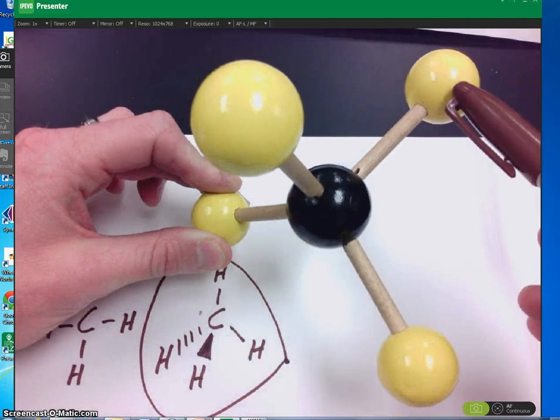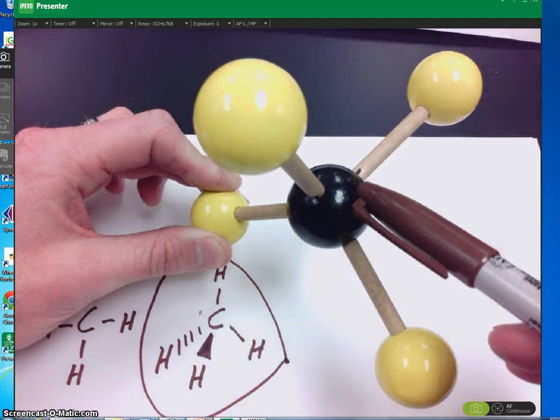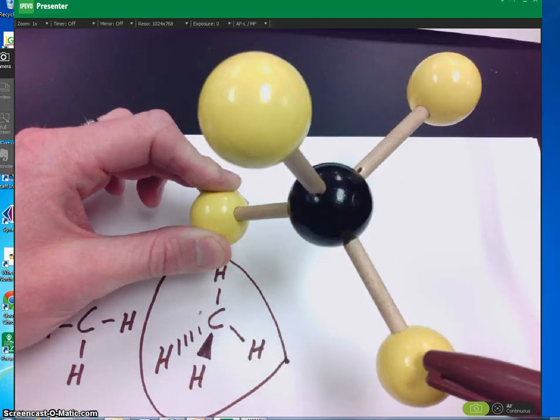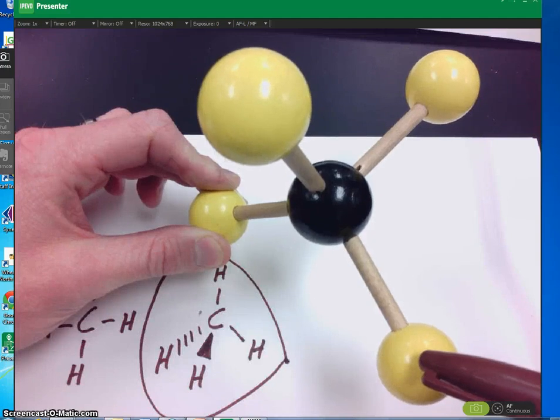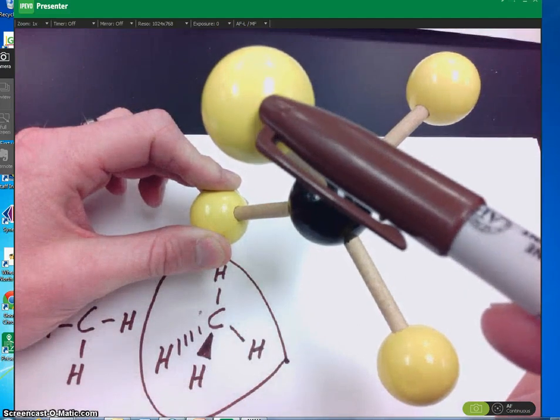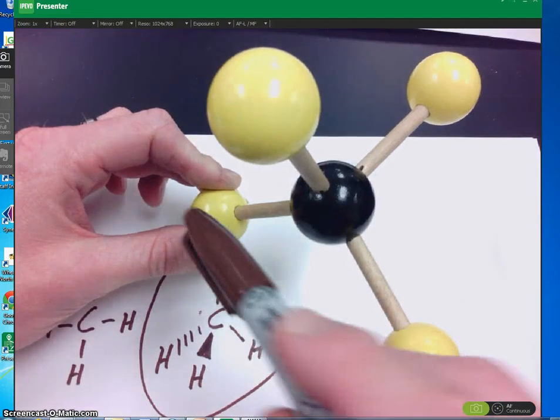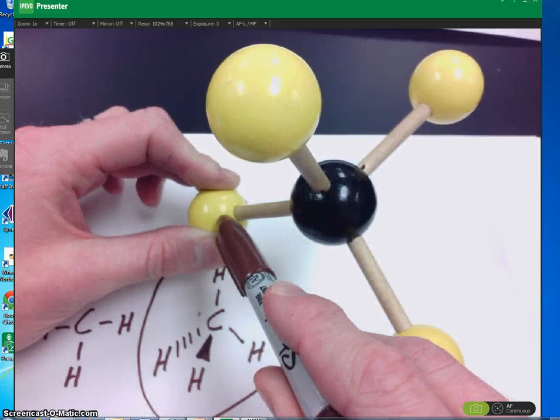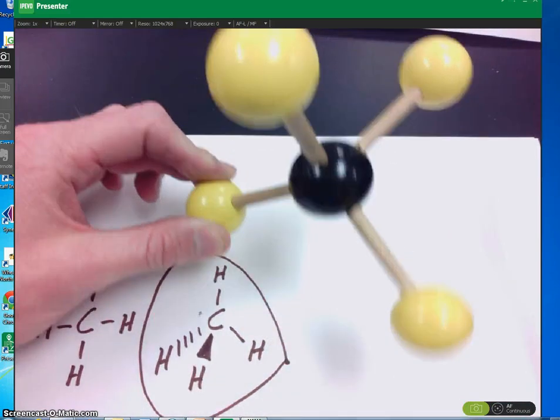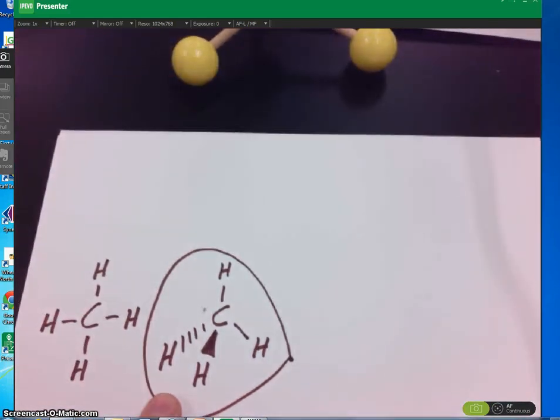Let's confirm that again using the model. This atom, this atom, and this atom are in the same plane. This atom is projecting towards you, and this atom is projecting away from you. This is the VSEPR structure for a tetrahedral molecule.